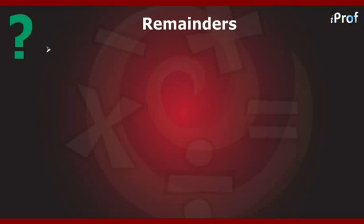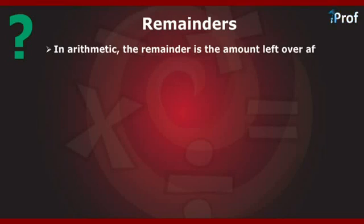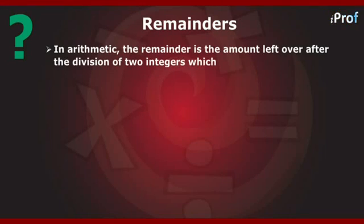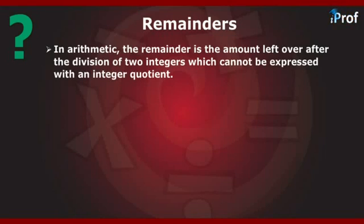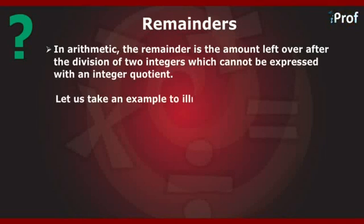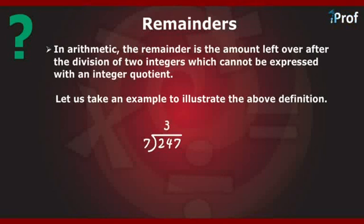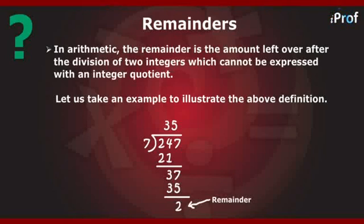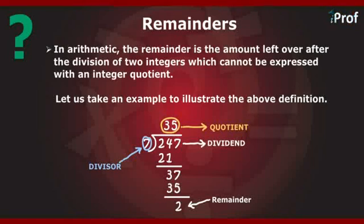And how to crack them easily. What actually is the remainder? In arithmetic, the remainder is the amount left over after the division of two integers which cannot be expressed with an integer quotient. We will now take an example to illustrate the above definition. Let us divide 247 by 7. On division, we see that 247 is not completely divisible by 7. The left over, or the remainder, is equal to 2. The other terms that are important to remember in division are divisor, quotient, and dividend. Further on, we will see how these terms are related to each other.